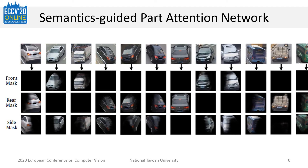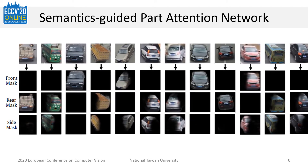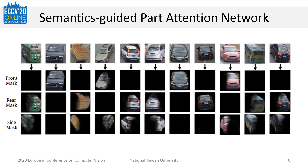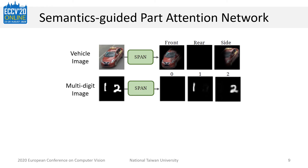Here are some examples of part attention maps generated from our SPAN. We can find that SPAN is robust on various vehicles — from compact cars to trucks, from black ones to white ones, and from front viewpoint to rear viewpoint. It is also worth mentioning that SPAN is general-purpose and can be used on other datasets. We show example results on the multi-digit dataset, where the semantic label represents which digit is visible in the image, and the network learns to generate the localization of each digit.